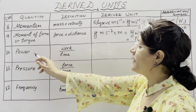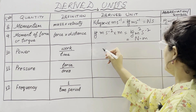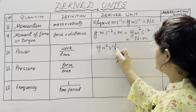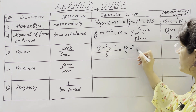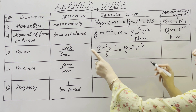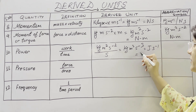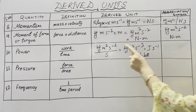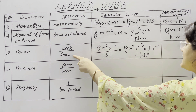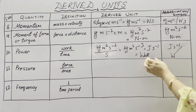The next physical quantity is power, and its definition is the rate of doing work — work divided by time. The SI unit of work is kg m² s⁻² and dividing by time (second) gives kg meter square per second cube. Since work is in joules and time is in seconds, power is joule per second, and its SI unit is watt, written as W. Power is said to be 1 watt when 1 joule of work is done in 1 second.